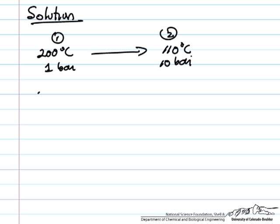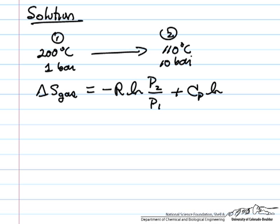So for an ideal gas, the entropy change for the gas, we don't know about the surroundings, we would need more information. Entropy change for the gas is equal to minus R log P2 over P1, plus the heat capacity, log T2 over T1.